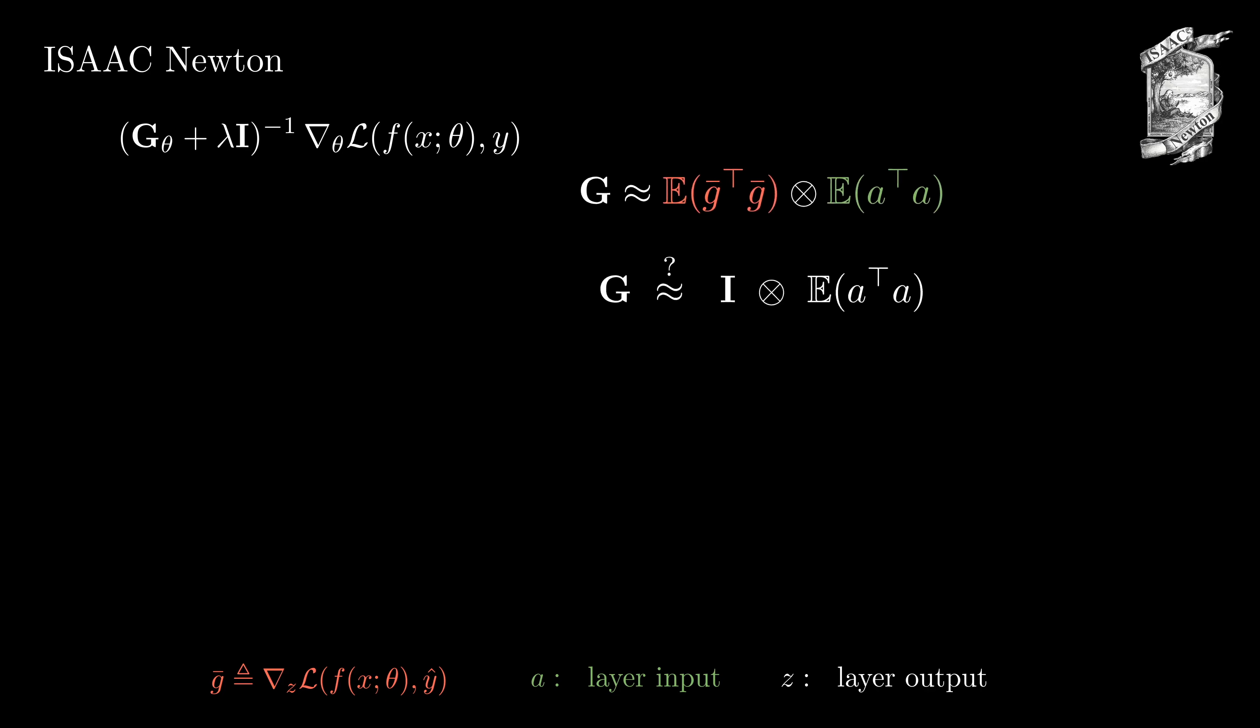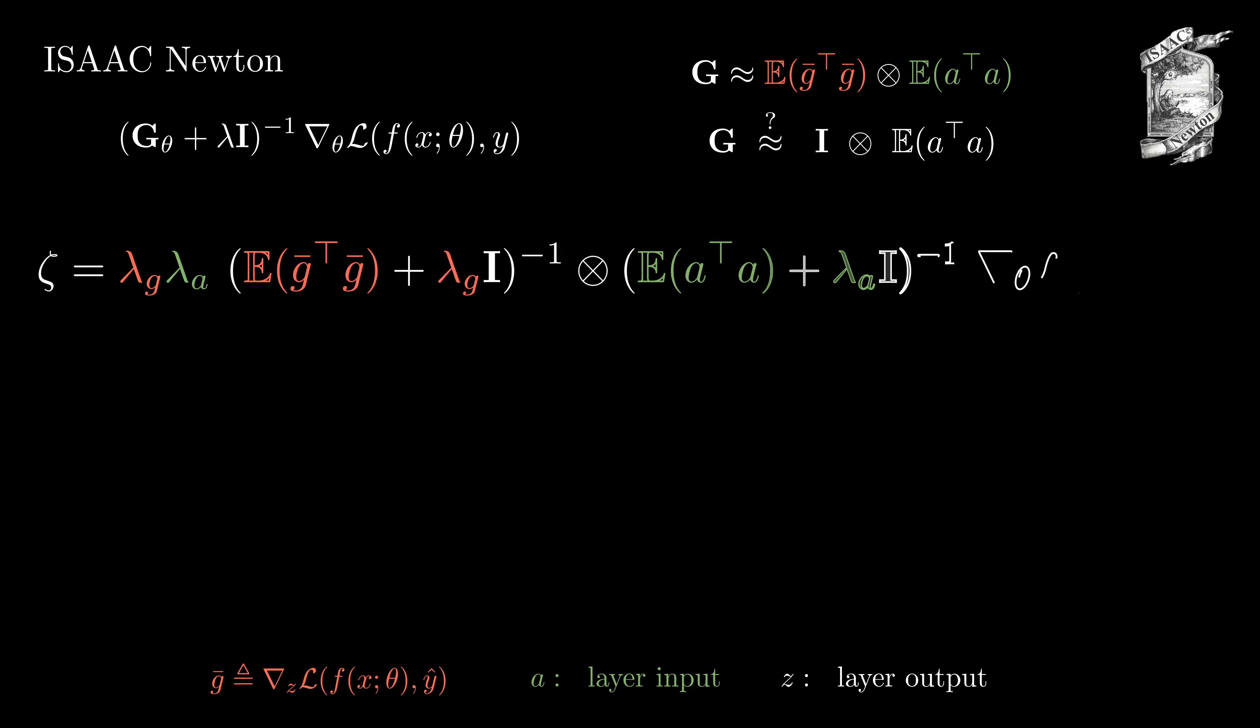For this investigation, let's introduce a generalization of the Tikhonov regularized KFAC-Gauss-Newton matrix-based update step, which we call zeta. Here we introduce two regularization parameters, lambda g and lambda a, for independently regularizing the g bar part and the a part. For this formulation, we can show that in the limit of both lambdas going to zero, zeta is the Newton update direction and in the limit of both lambdas going to infinity, zeta is the gradient descent update.